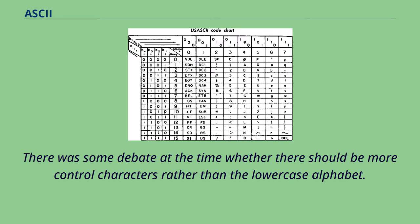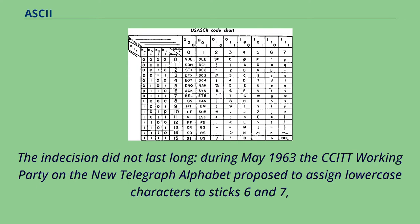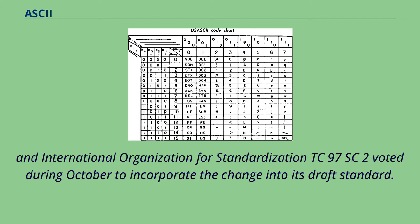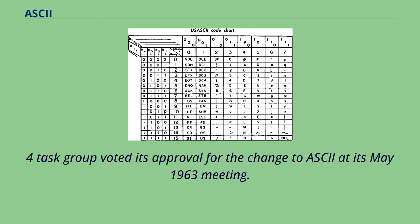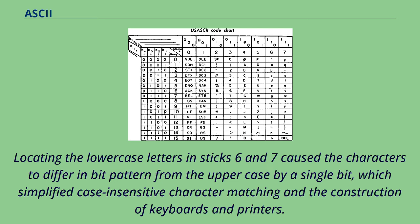There was some debate at the time whether there should be more control characters rather than the lowercase alphabet. During May 1963 the CCITT Working Party on the New Telegraph Alphabet proposed to assign lowercase characters to columns 6 and 7. An international organization for standardization TC97SC2 voted during October to incorporate the change into its draft standard. The X3.2.4 task group voted its approval for the change to ASCII at its May 1963 meeting. Locating the lowercase letters in columns 6 and 7 caused the characters to differ in bit pattern from the uppercase by a single bit, which simplified case-insensitive character matching and the construction of keyboards and printers.